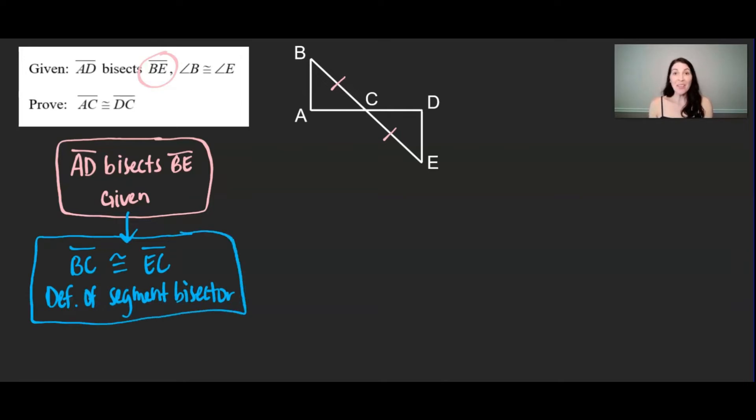Now for my other given, angle B is congruent to angle E. And that's also a given. Let's go ahead and mark that in the diagram, that angle B is congruent to angle E.